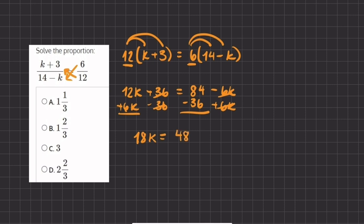In order to find the value of k, we are going to isolate it by dividing 18 on both sides. We have k equals 48 divided by 18. We can simplify this fraction by dividing by 2, the top and bottom. So now we have k equals 24 divided by 9.